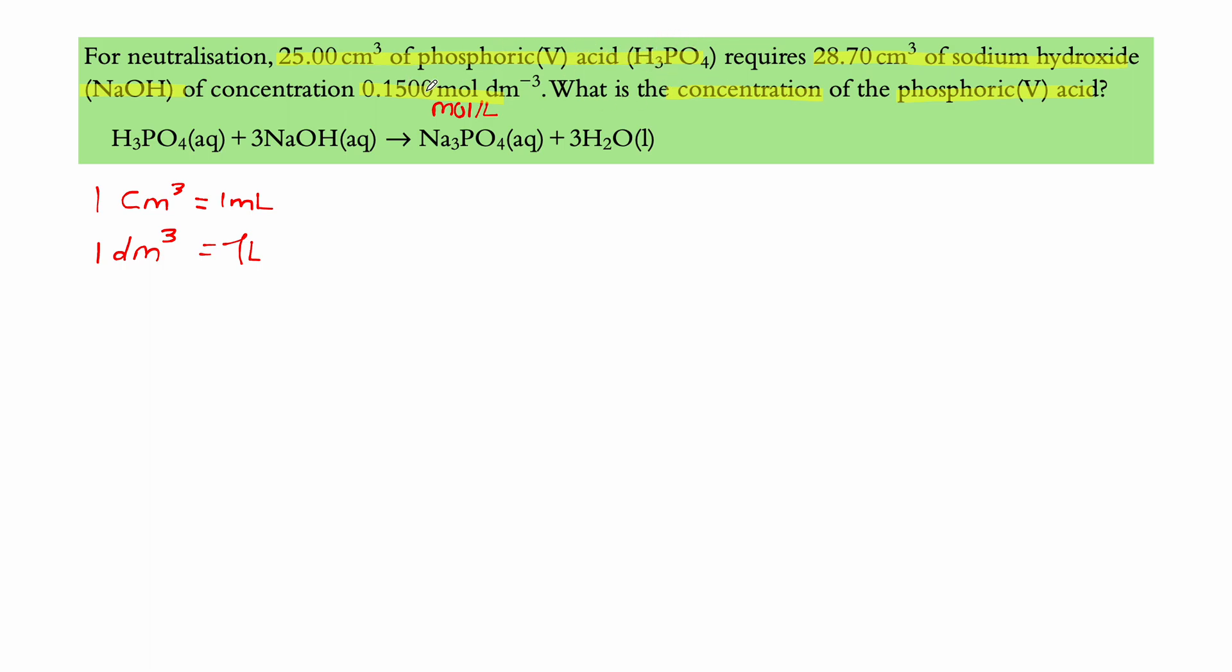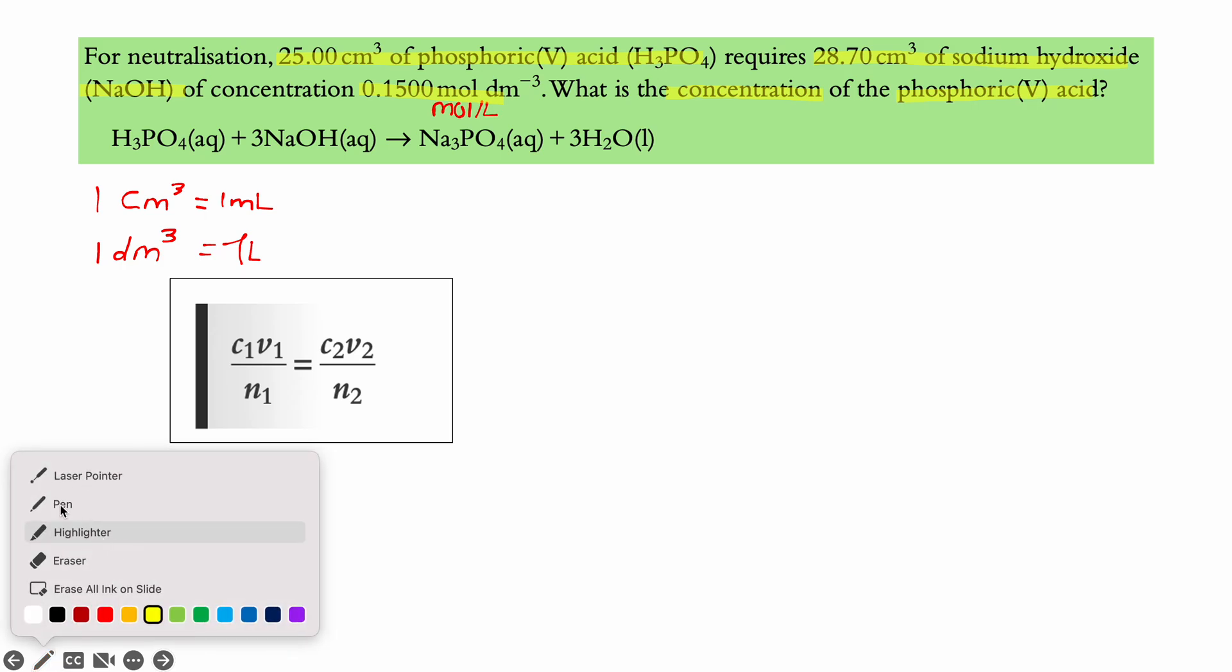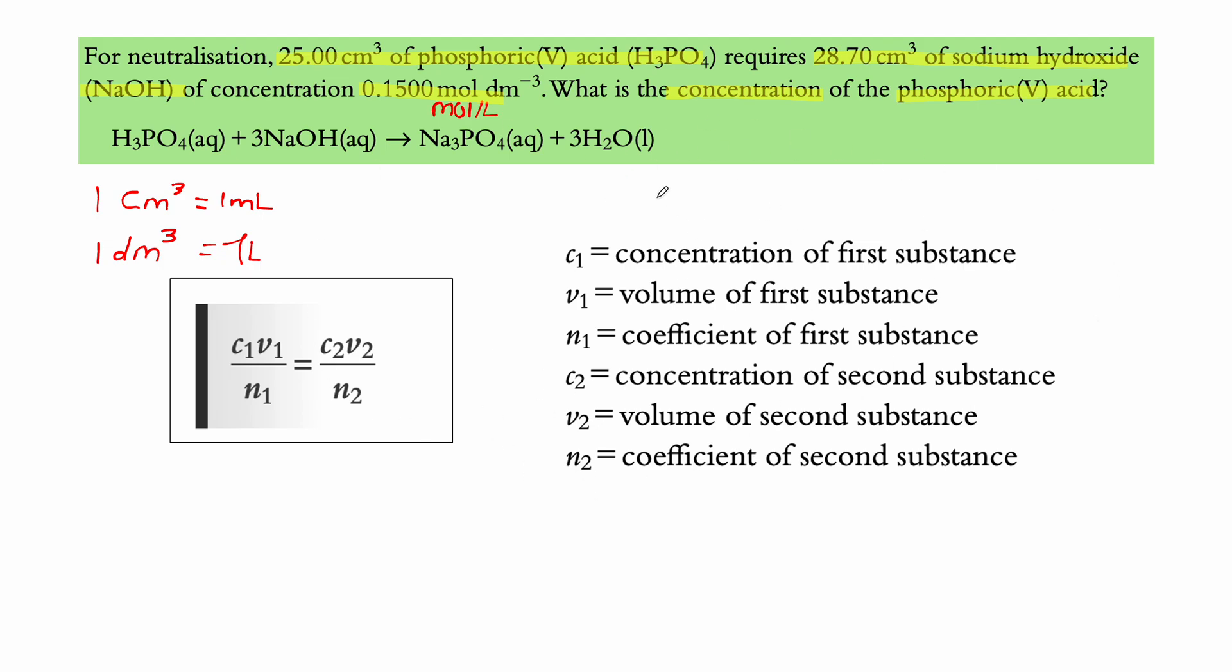So in this case, we know the volume of phosphoric acid, the volume of sodium hydroxide, the concentration of sodium hydroxide, but we don't know the concentration of the phosphoric acid. So to start, there's a very important formula which we have in these typical titration problems. And here are the labels for that formula. So C1 refers to the concentration, V is volume, and n is the coefficient of the first substance. So looking at this formula, what do we have already?